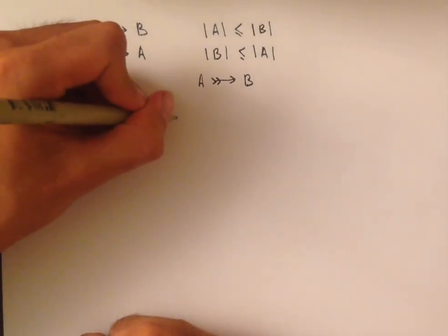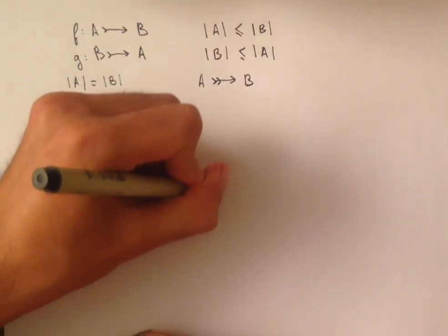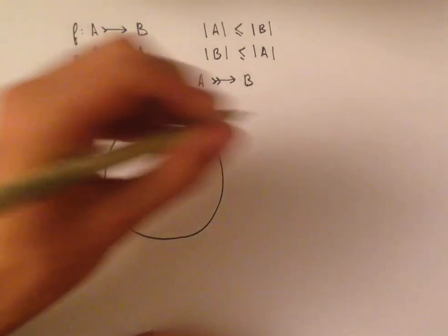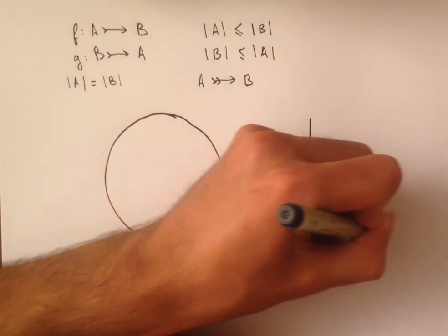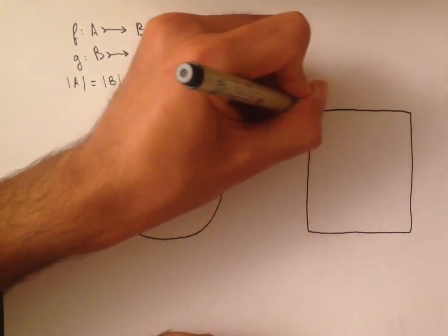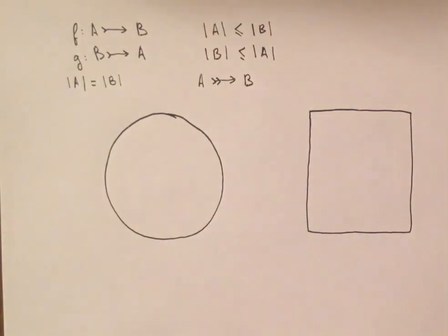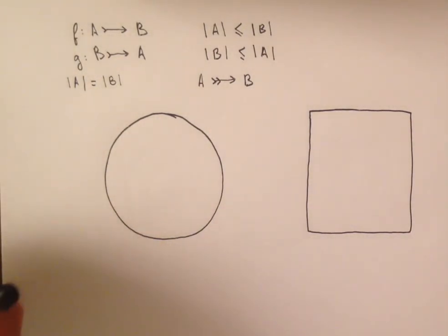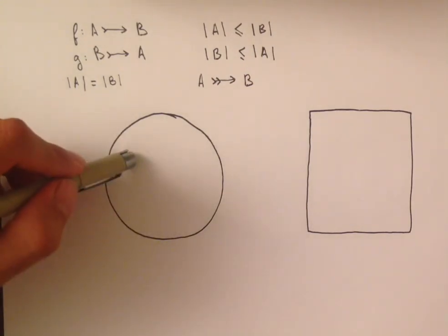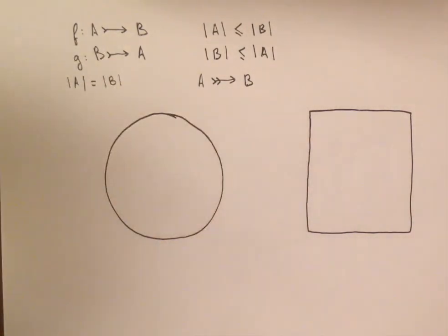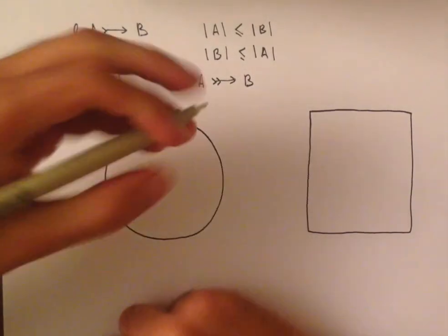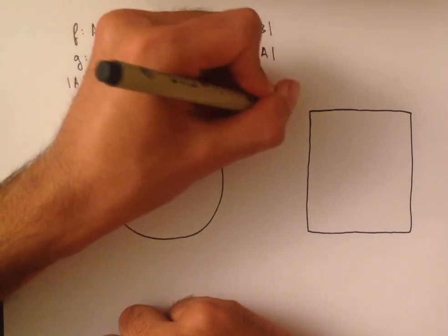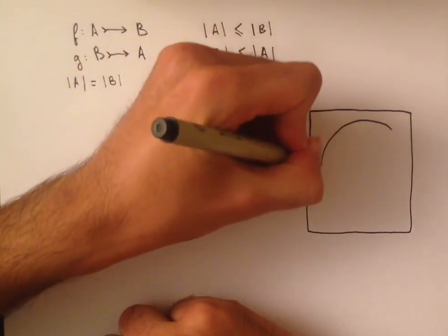And so we're going to represent our set A as a circle and our set B as a square. And so we're going to take the image of the circle using F, and that is some subset of B, and it's an injection. So each point in the circle is going to map to exactly one point in the square, but it might not cover all of the square. So when we take F of the circle A, we get the smaller circle.